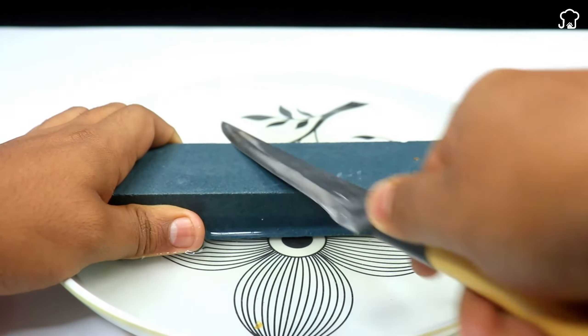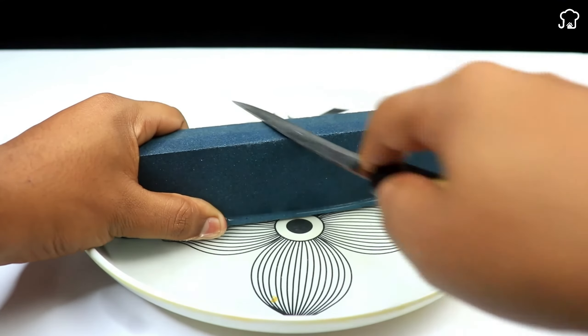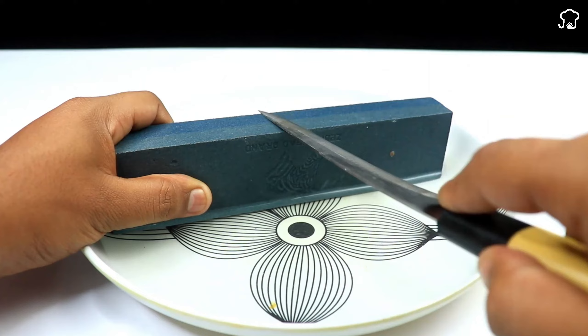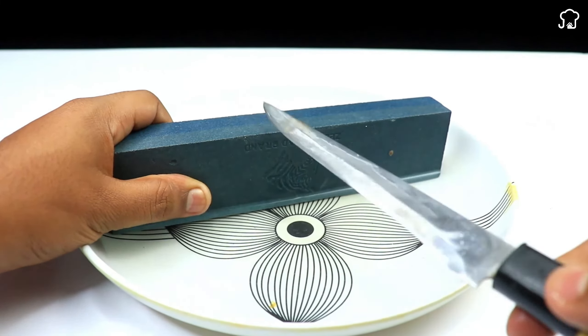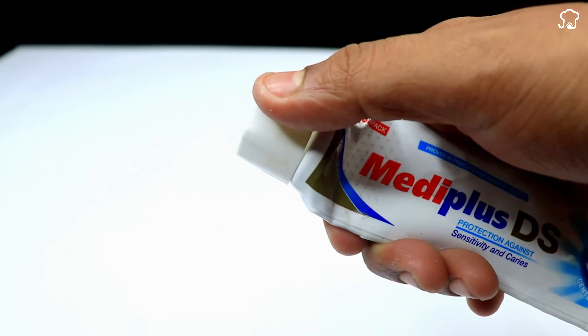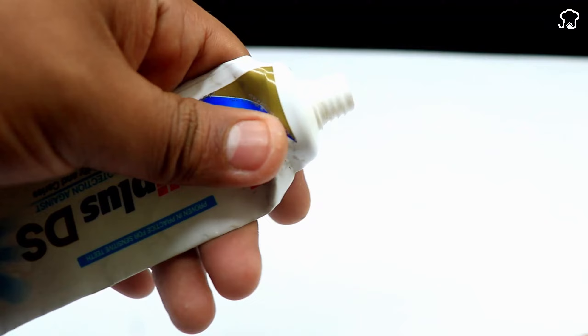Afterwards, we will apply toothpaste on the edges of the knife. The toothpaste will act as a mild abrasive that will contribute to the sharpening process.